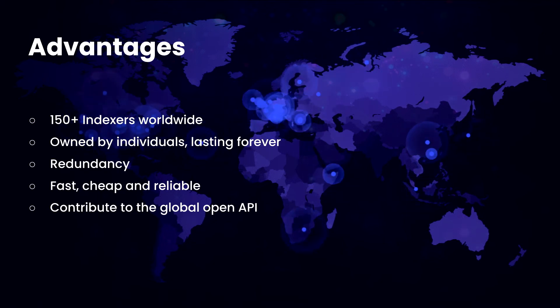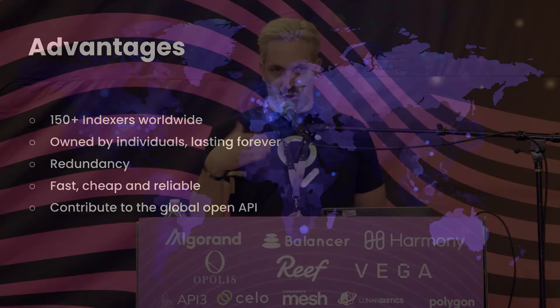It is fast, cheap, and reliable. With the global spread, if you are in Asia and want to query from The Graph, you will probably be assigned to an indexer in Asia too, which lowers the latency of your queries. It is also more reliable. And in general, we are building Web3 here — it makes sense to contribute to the global open API so that data starts to be free and moves out of centralized silos.